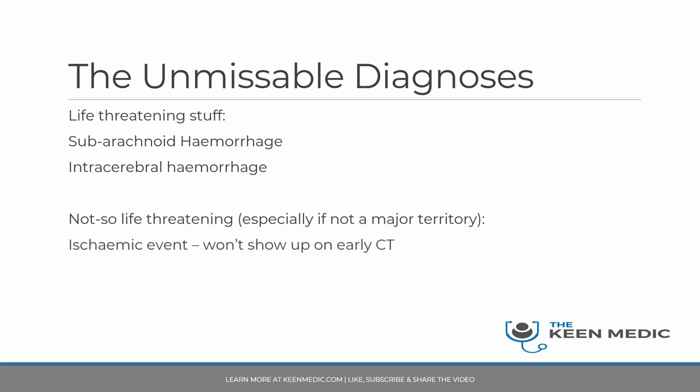Ischemic events are not so immediately life-threatening, especially if not a major territory infarct. Importantly, ischemic events don't show up on a CT head scan done within the first few hours. The patient may have symptoms — usually an acute onset that persists, indicating ongoing ischemia from a blocked artery. The reason you do a CT head is to rule out hemorrhage, not to look for ischemia.